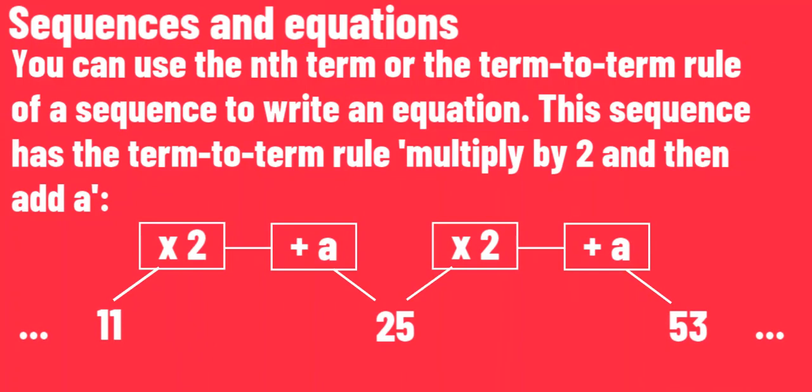Sequences and equations: You can use the nth term or the term-to-term rule of a sequence to write an equation. This sequence has the term-to-term rule multiply by 2 and then add a.